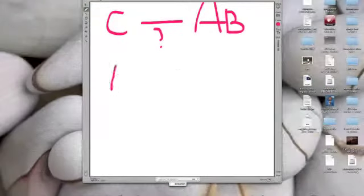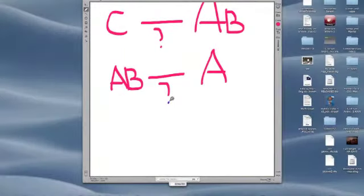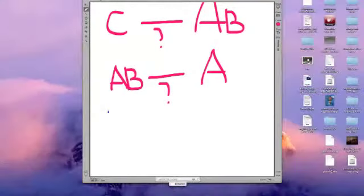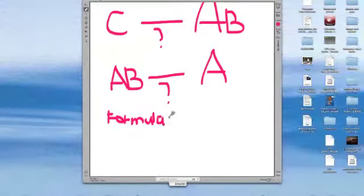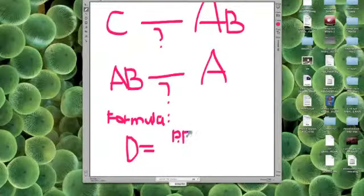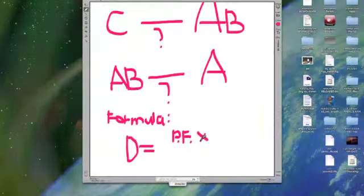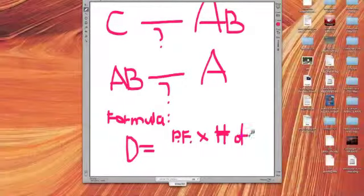Now, let us find the distance of point C to point AB and from point AB to point A. The formula that we are going to use is distance equals pace factor times number of paces. Using this formula, we are able to get the distance which is 0.69 meters and 4.11 meters respectively.